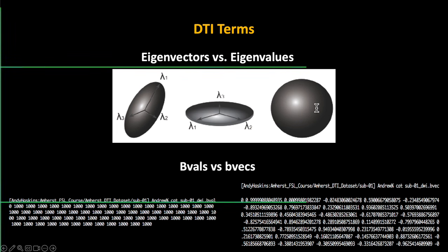These tensors are designed to try to reconstruct the size and direction of these different tracks, and we do that at every different voxel.